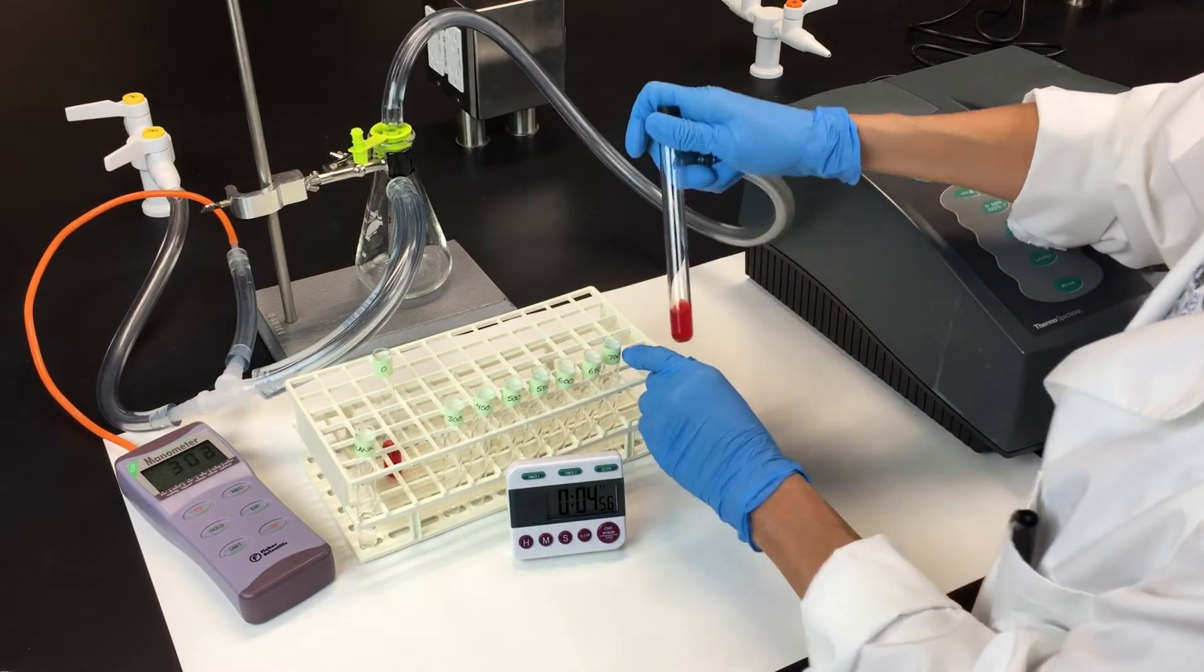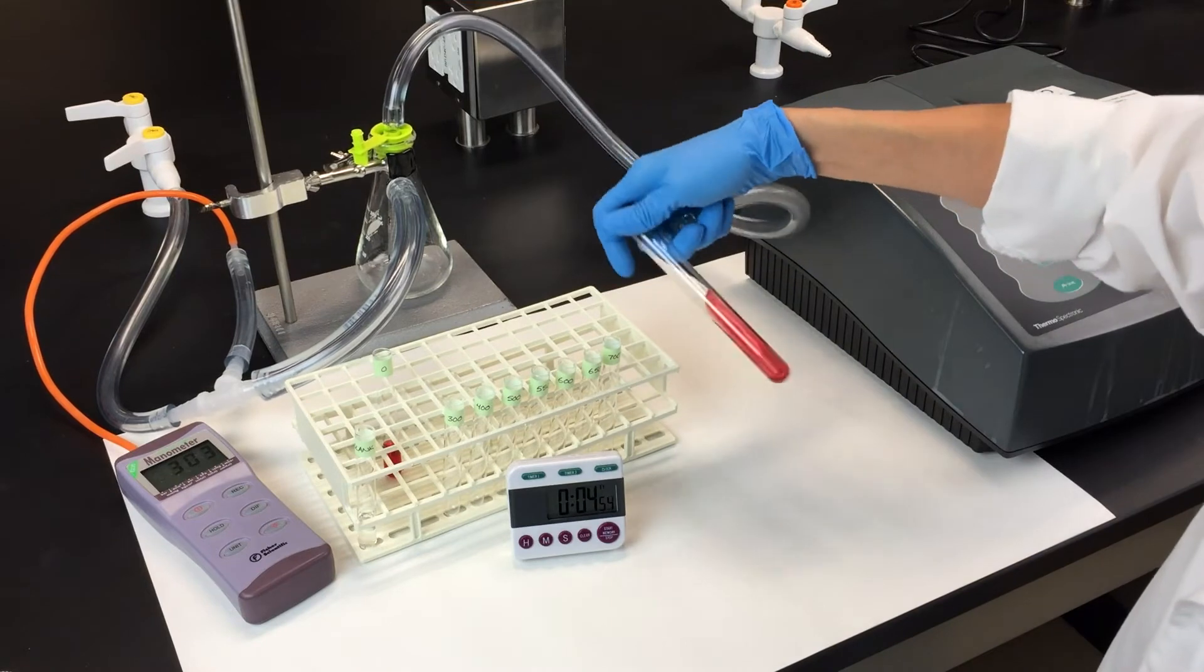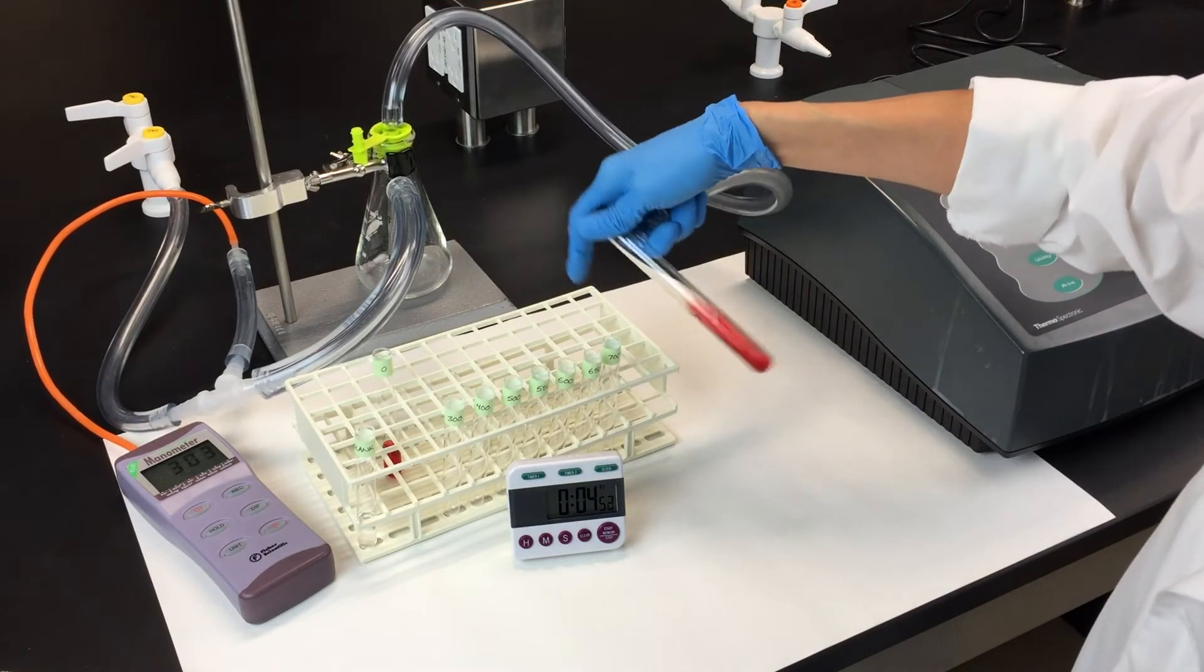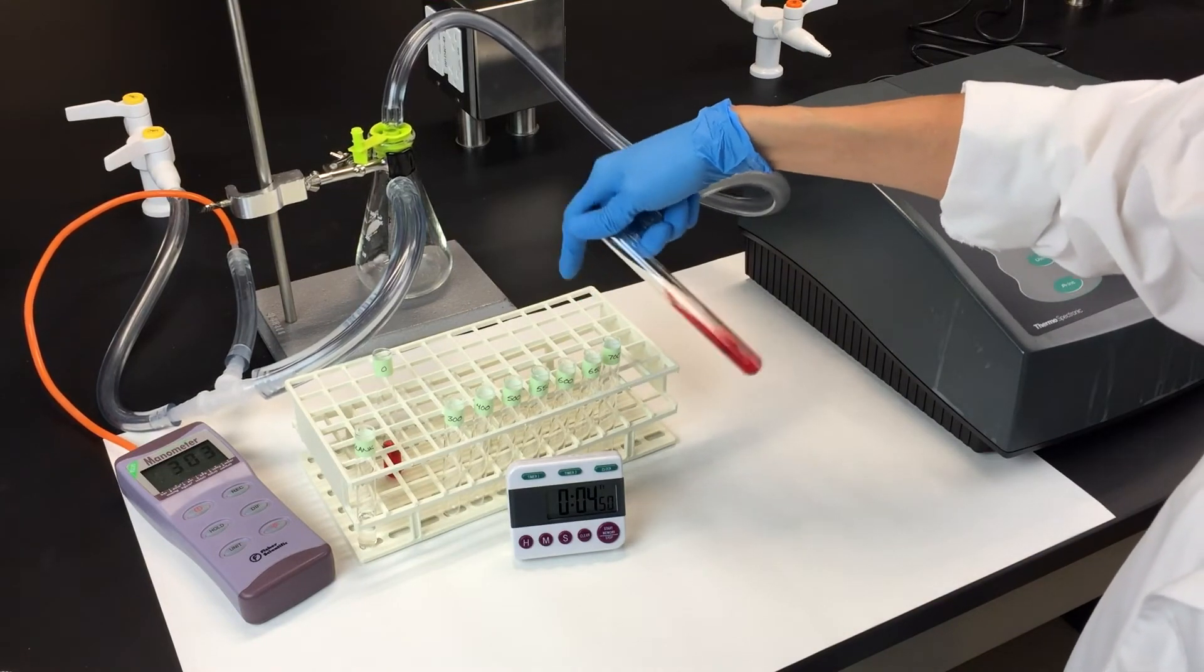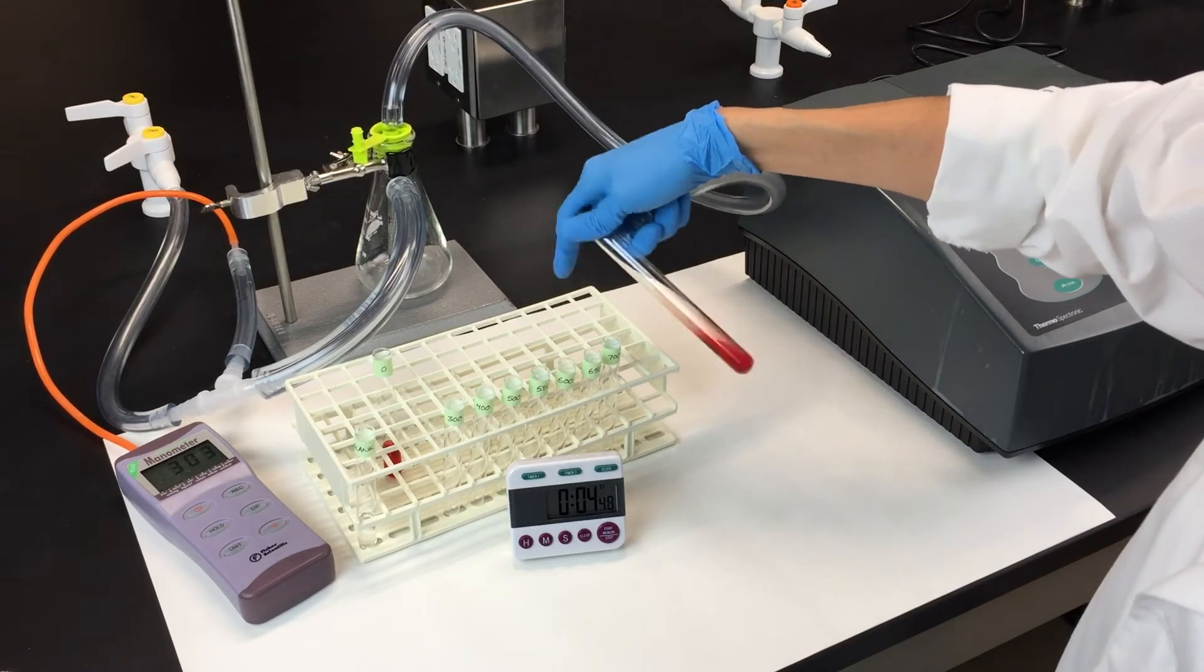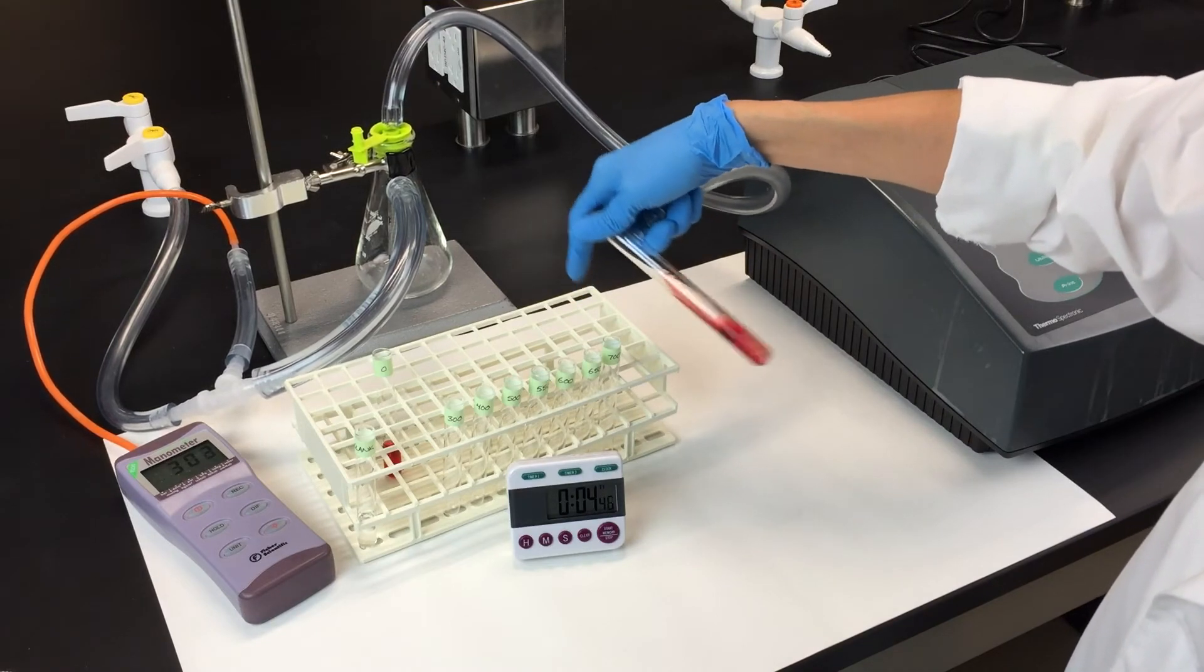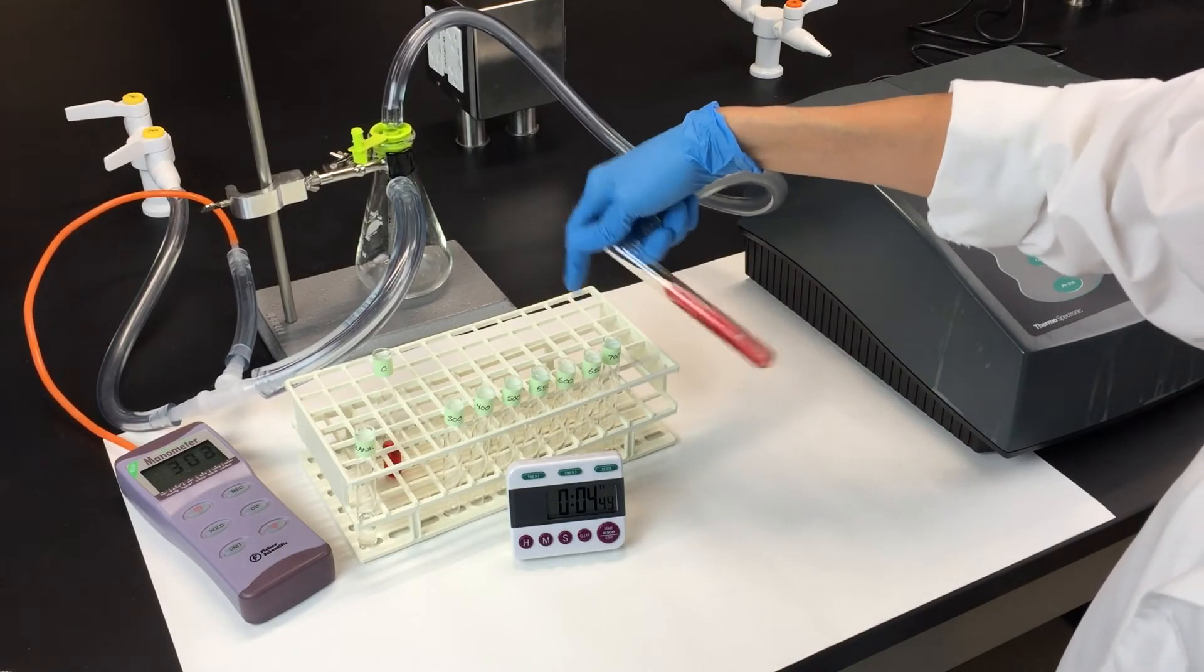Pick up the sidearm tube, tilt it, and begin shaking it at a steady rate. You want to expose as much of the hemolysate to the vacuum as possible. You also want to be careful not to get the hemolysate in the vacuum tubing.